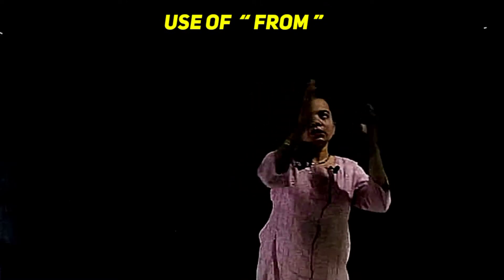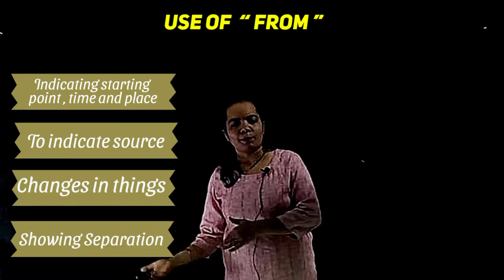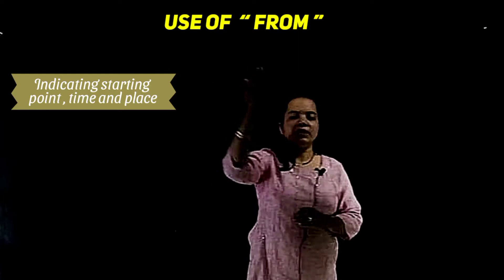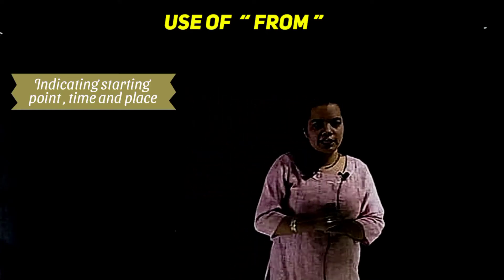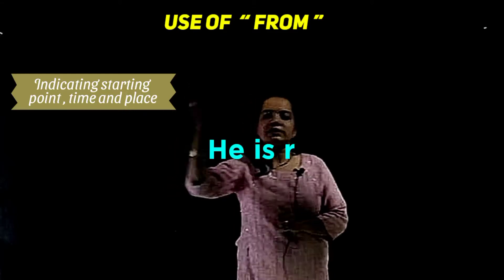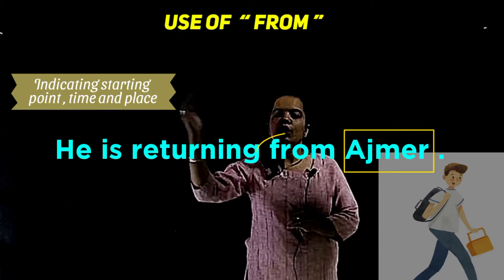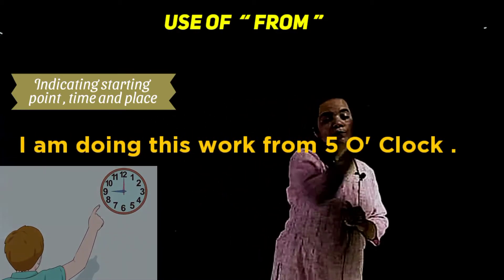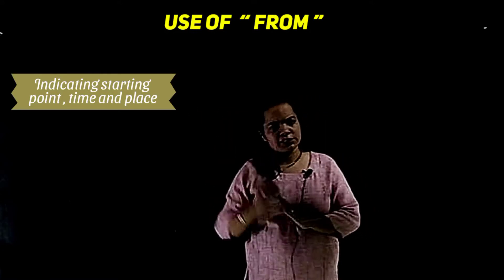Students, I am teaching you the use of the preposition 'from'. There are four main types. The first one is indicating the starting point of time, place, or anything else. For example, 'He is returning from Ajmer' — Ajmer was the starting point. Another example: 'I am doing this work from five o'clock' — so 'from' is used to show the starting point of time or place.